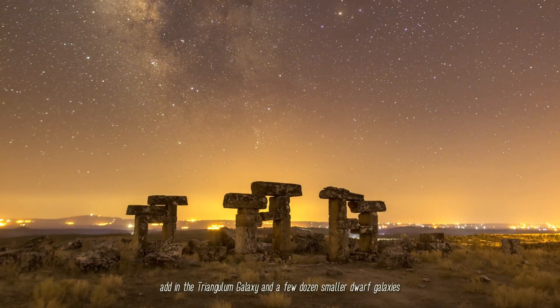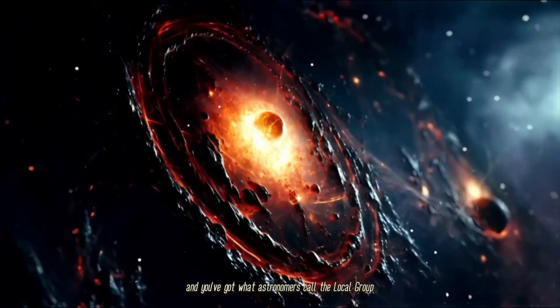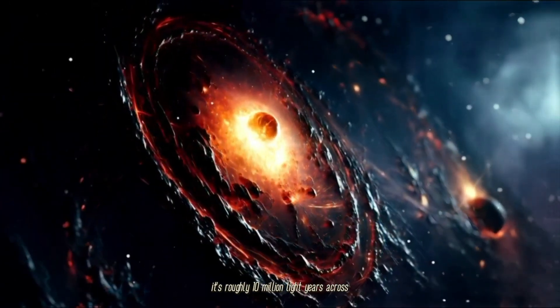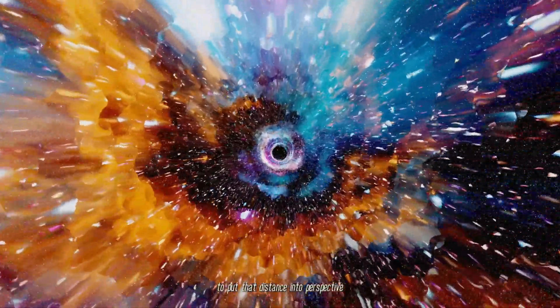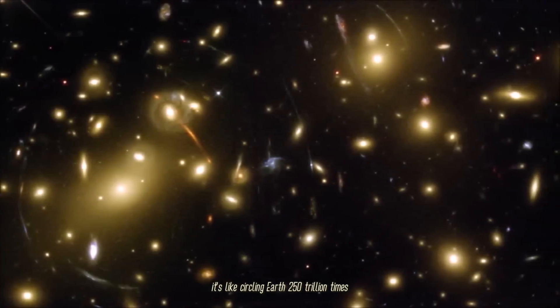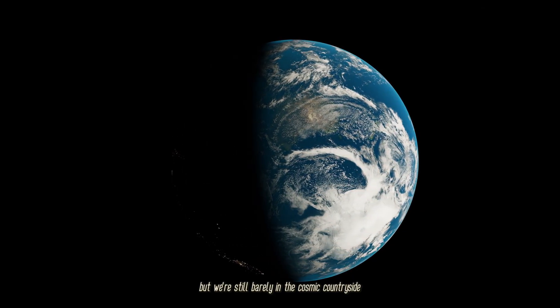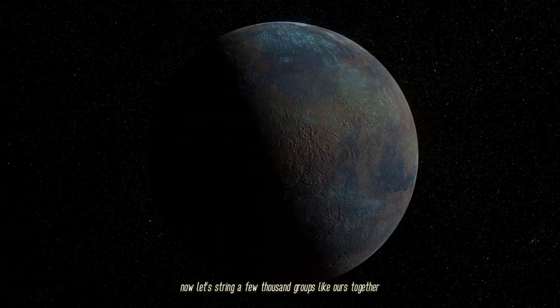Add in the Triangulum galaxy and a few dozen smaller dwarf galaxies, and you've got what astronomers call the Local Group. It's roughly 10 million light-years across—like circling Earth 250 trillion times. We're still barely in the cosmic countryside.